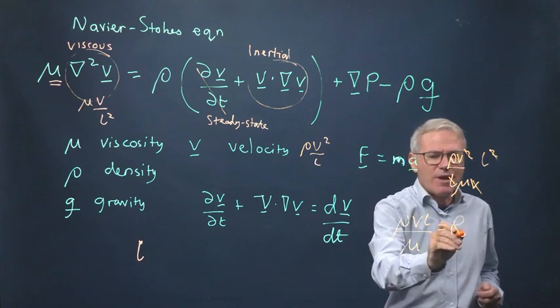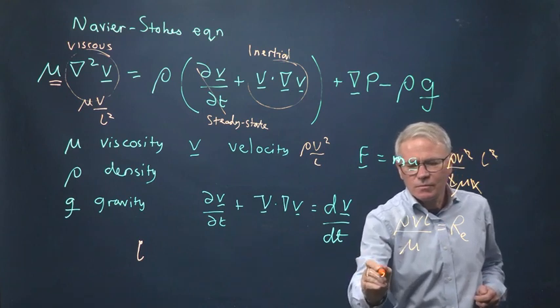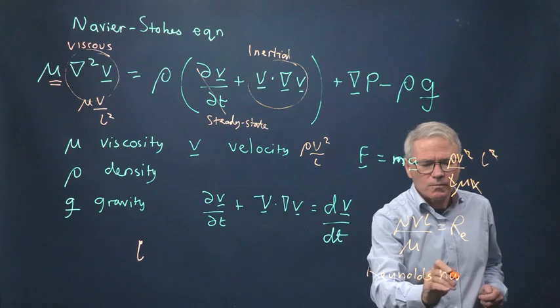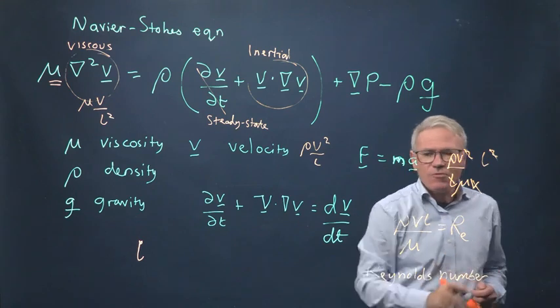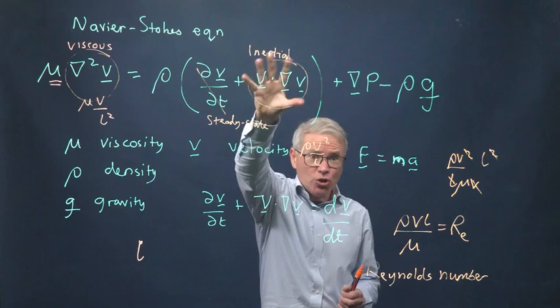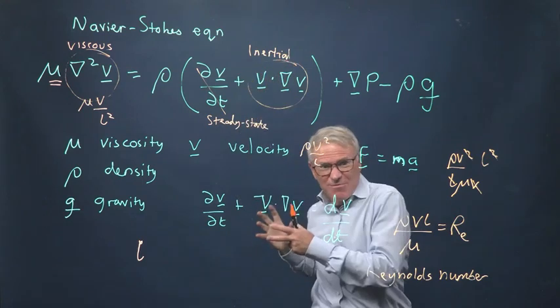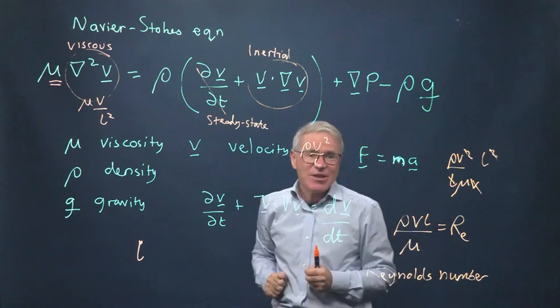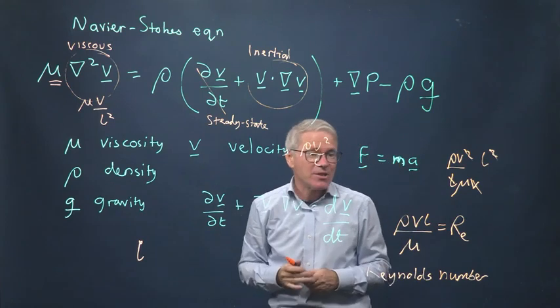And this is what's called the Reynolds number. And it's the ratio, essentially, of this inertial term to the viscous dissipation.